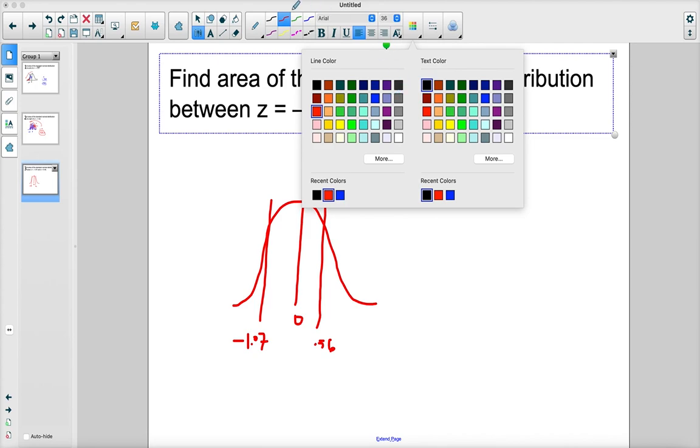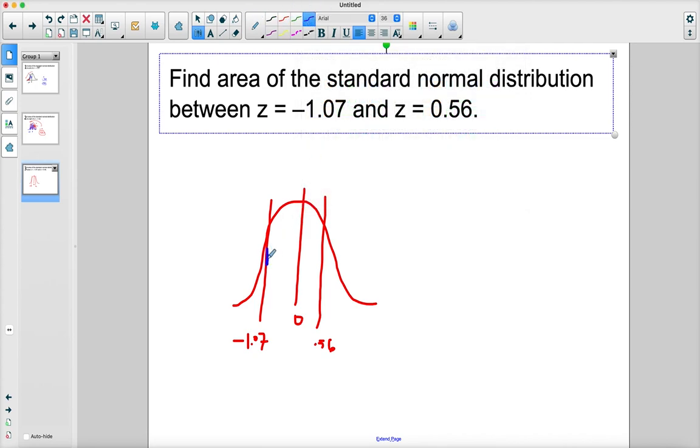Well, if I think about this, the table will tell me between the z-score and 0. So I could get this value from the table for 1.07. And I could get this value from the table. So between 0 here and 0.56 here. So I could get this value from the table as well. So basically it's asking for this area and this area all together. So what I can do is I can add them together, right? So this blue plus this blue will give me this entire area. So once I find these two separate, I can add them.